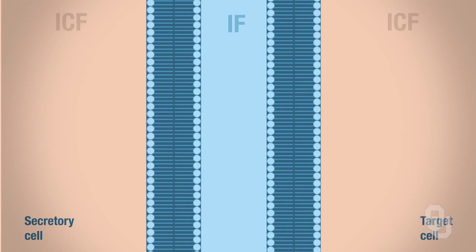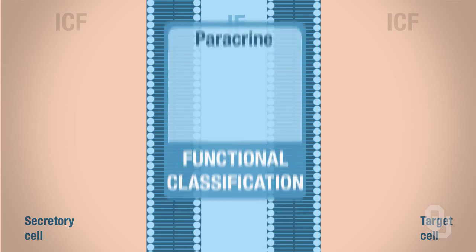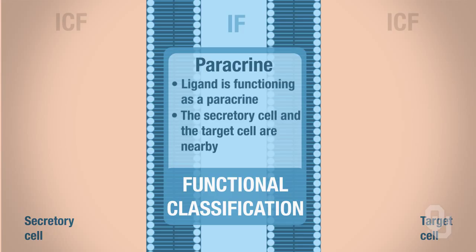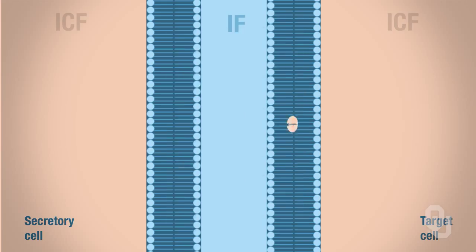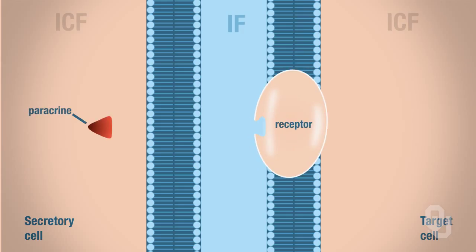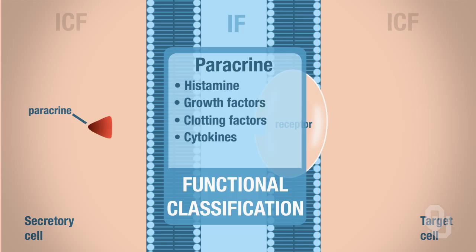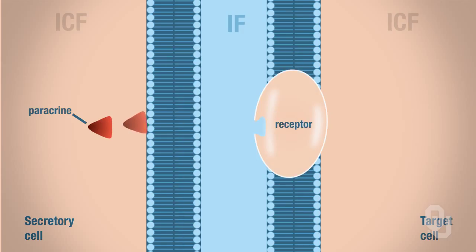Let's begin with paracrine signals. If a ligand functions as a paracrine signal, the secretory cell and target cell are nearby but not physically connected. The secretory cell synthesizes and secretes the paracrine ligand — examples include histamine, a growth factor, a clotting factor, or a cytokine. That signal travels through the interstitial fluid, binds to the receptor, and produces a target cell response.